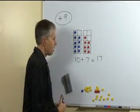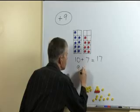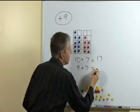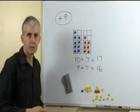What would it be if we added 9 plus 7? If we take one of the counters away, clearly we've got one less than we had before, and that is 16.